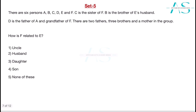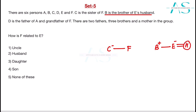Next question with six members A to F. C is the sister of F. B is the brother of E's husband. D is the father of A and the grandfather of F. So D is in the top generation, A is below D, and F is below A. There are two fathers in the family, three brothers, and one mother.